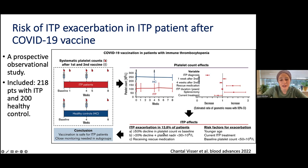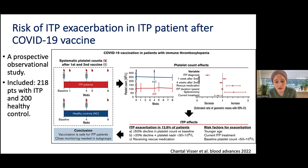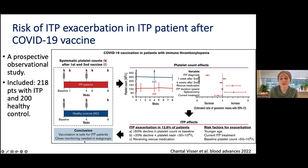The study conclusion — and it's not perfectly designed — noted an ITP exacerbation rate of 13.8% in all patients, falling into two categories: more than 50% decline in platelet count from baseline, or a 20% decline plus platelet count less than 30. The conclusion was that the vaccine is safe in ITP patients, but you need to be cautious about certain subsets — younger patients, those currently needing treatment, or those with a baseline platelet count less than 50.